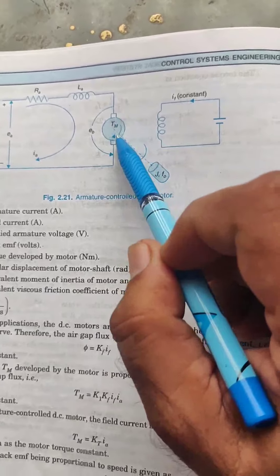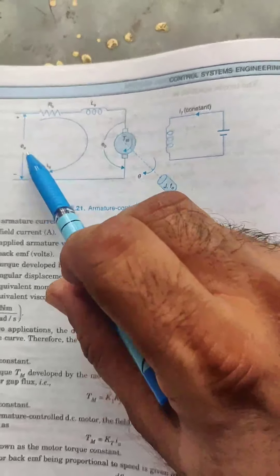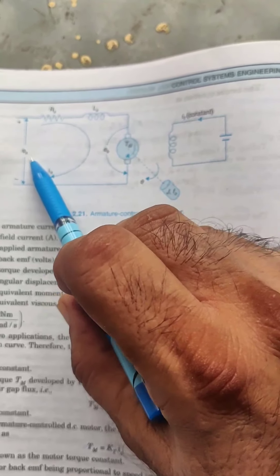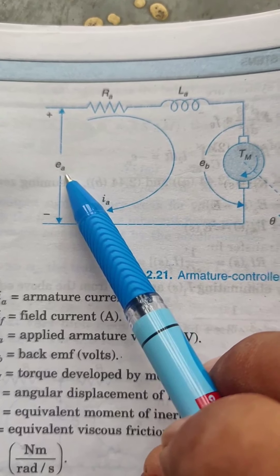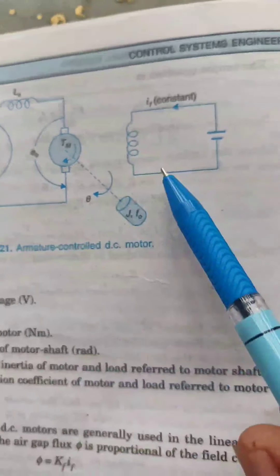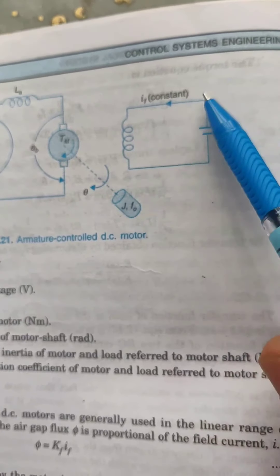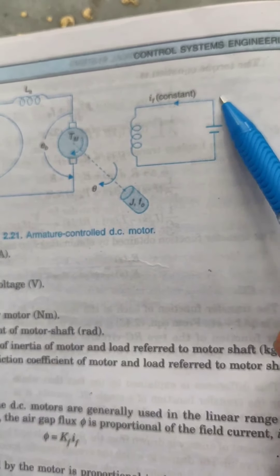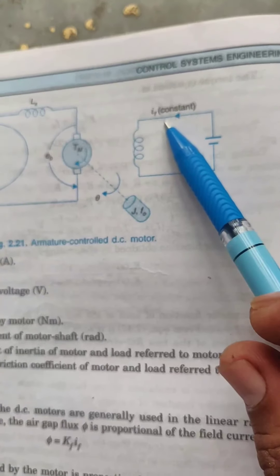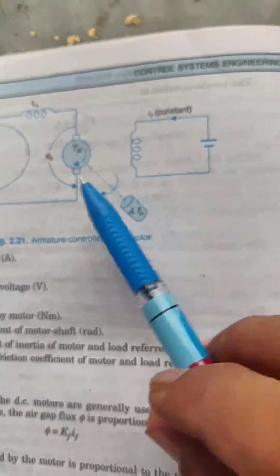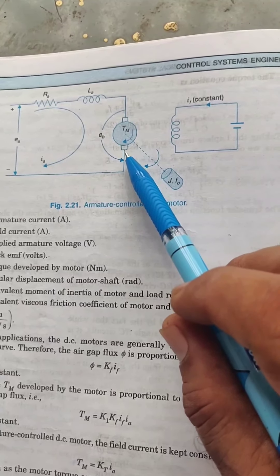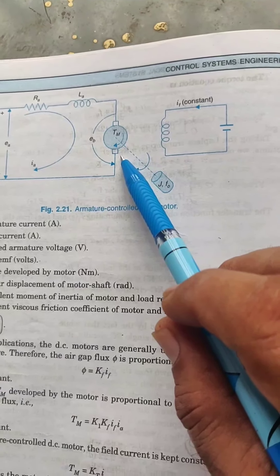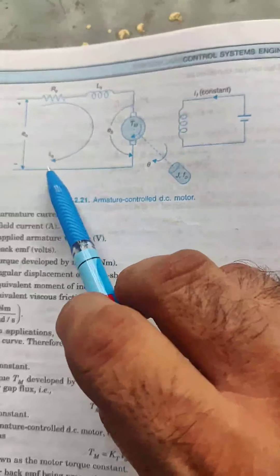TM is the motor torque produced in the armature, EA is the input voltage to the armature. The field current or field winding has a constant voltage supply of DC power, so the field current is constant. Only the armature current is the variable.